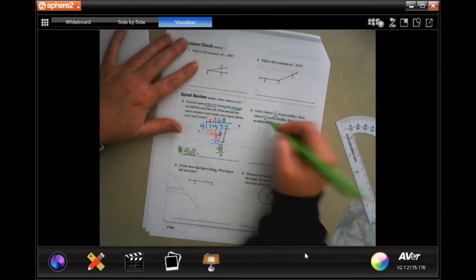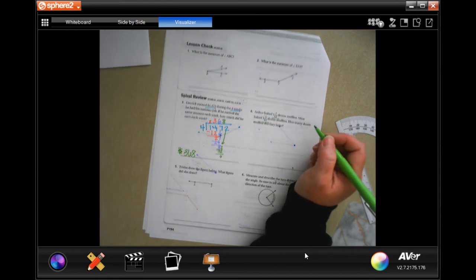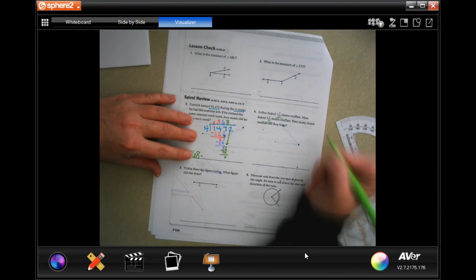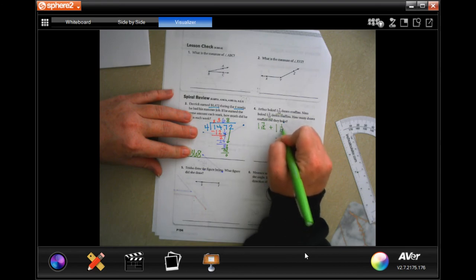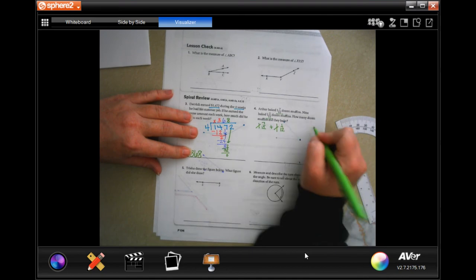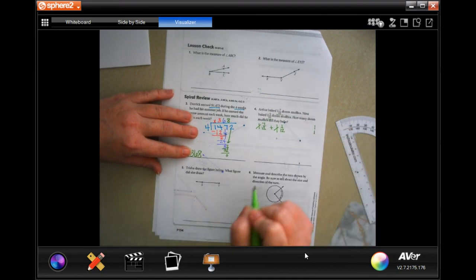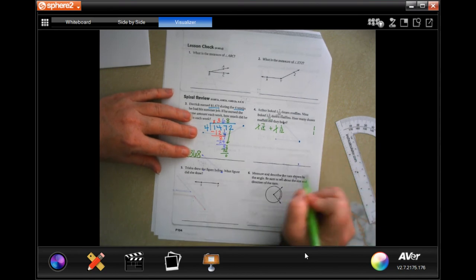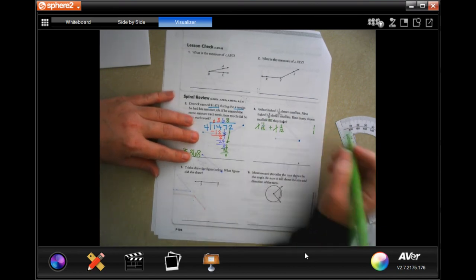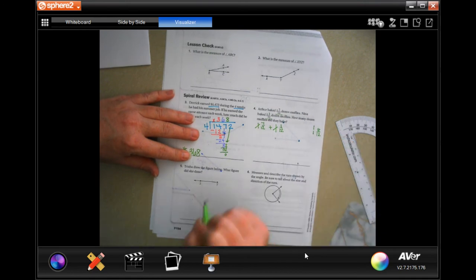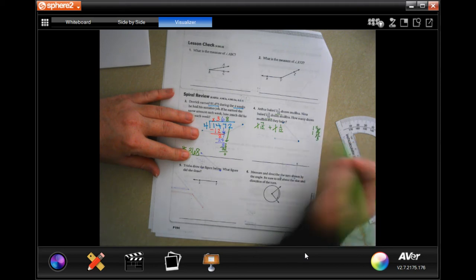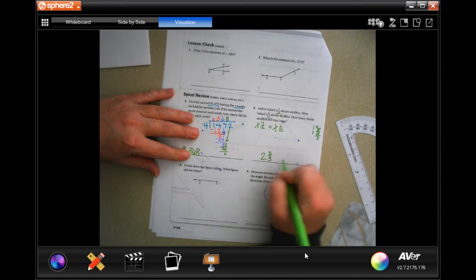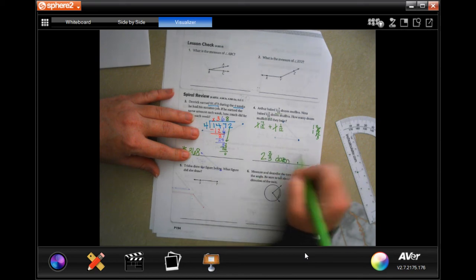All right, Arthur baked 1 and 7/12 dozen muffins. Nina baked 1 and 1/12 dozen muffins. How many muffins did they bake? So 1 and 7/12 plus 1 and 1/12. Well, I'm gonna take that 1 and that 1 and I'm gonna put them over here so that I can go ahead and add those up afterwards. Now 7/12 and 1/12, well that's 8/12. So now I have 2 and 8/12, but 8/12 can be reduced. 4 goes into 8 twice and 4 goes into 12 three times, so 2 and 2/3 dozen muffins.